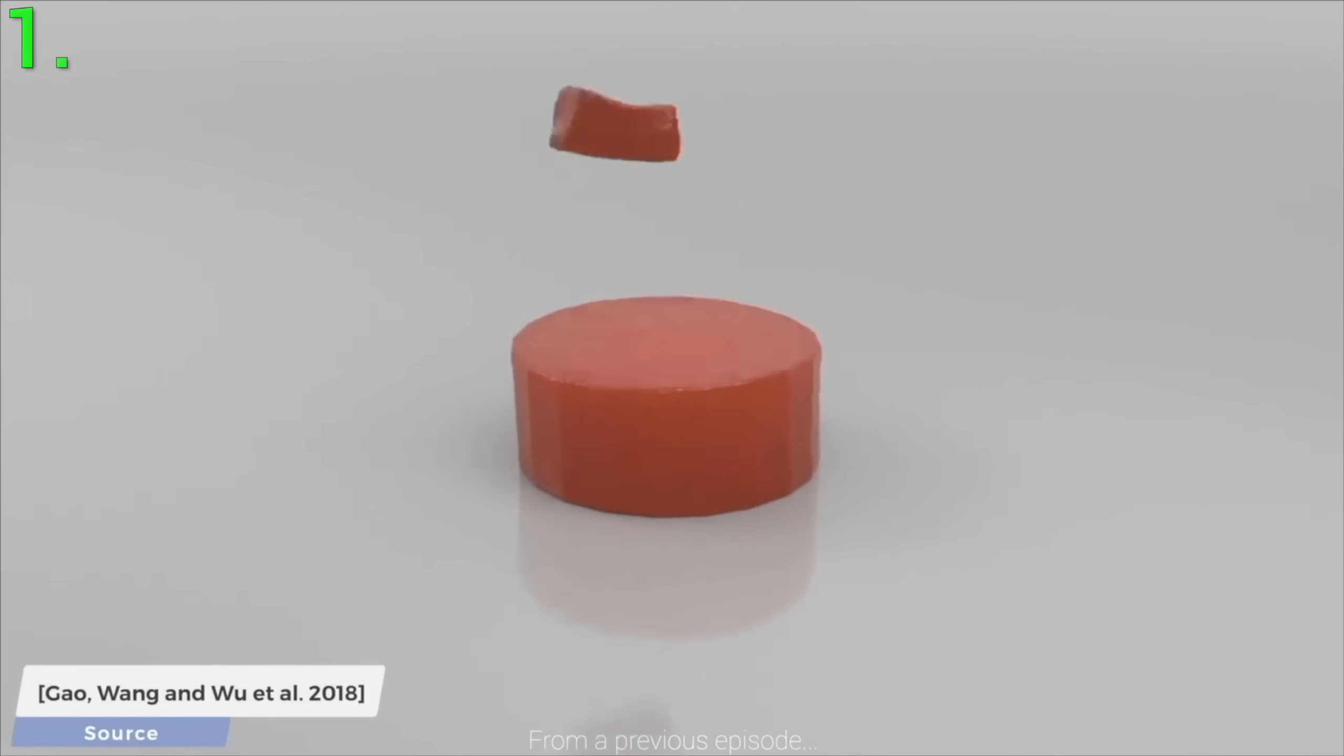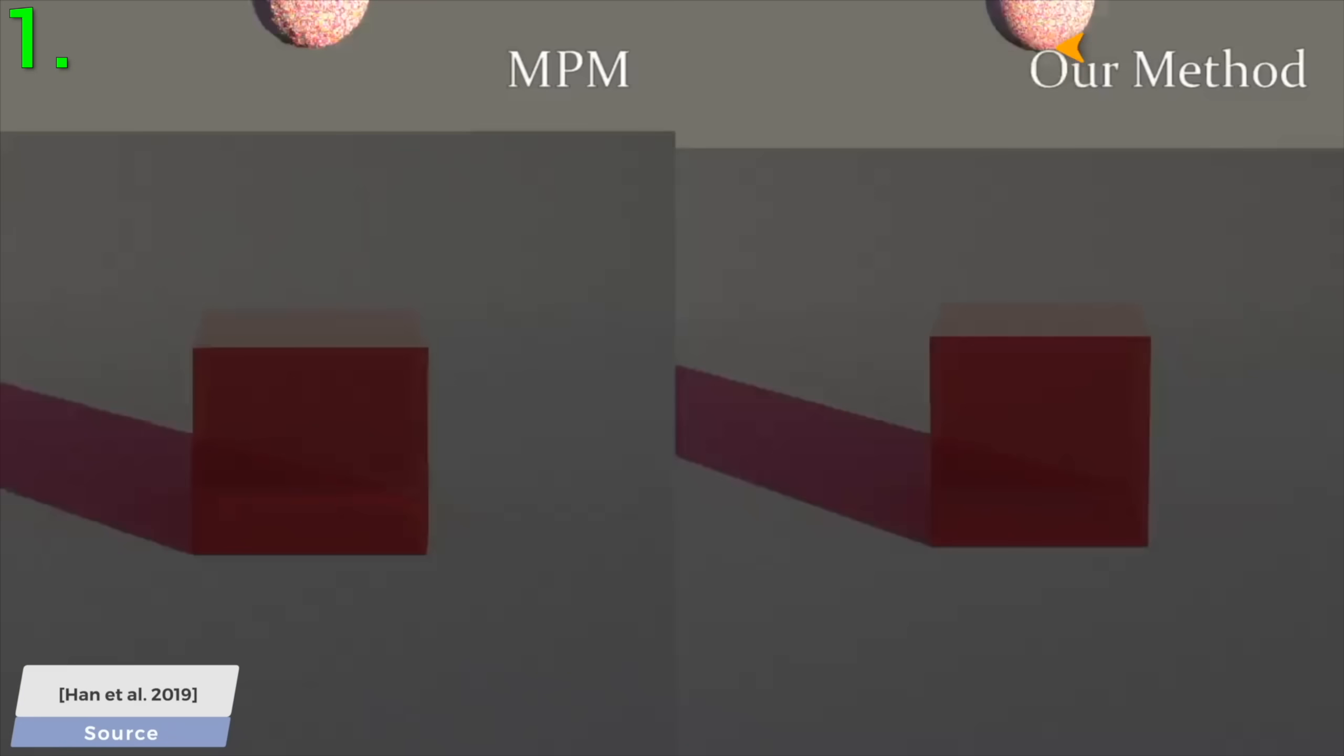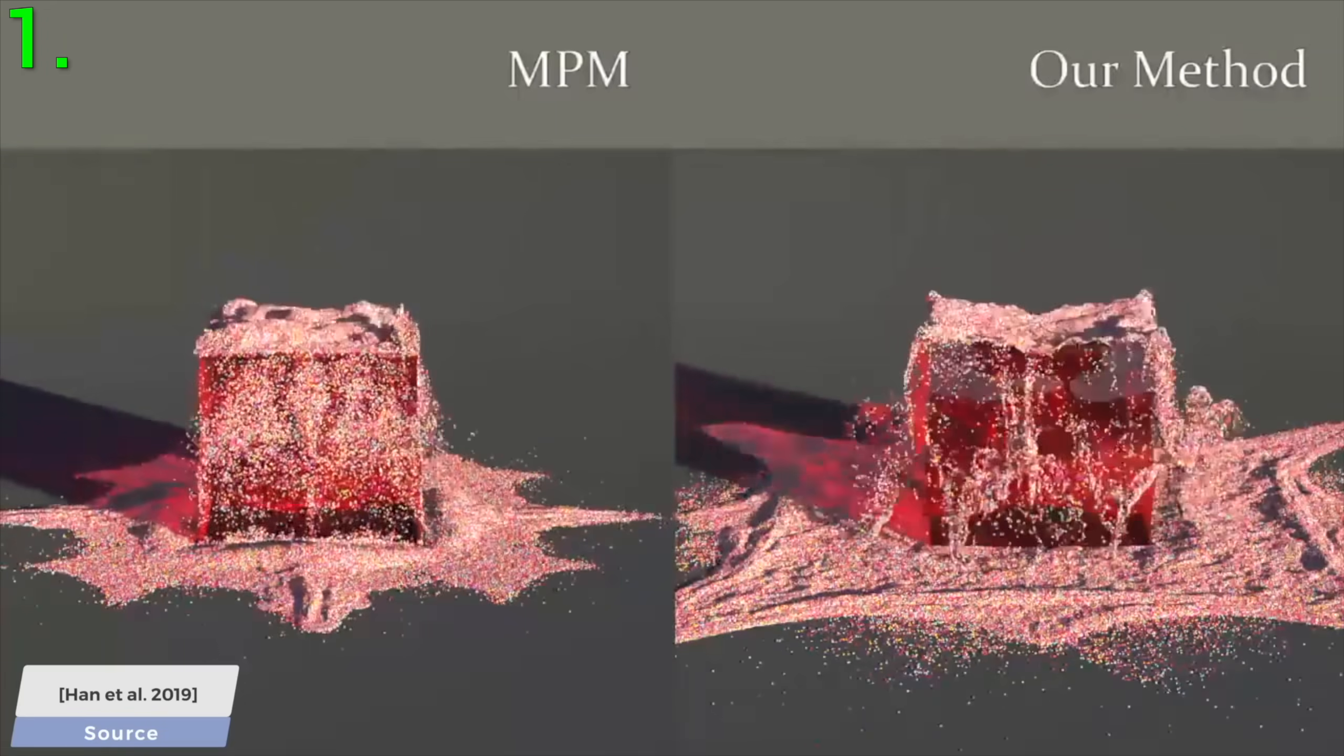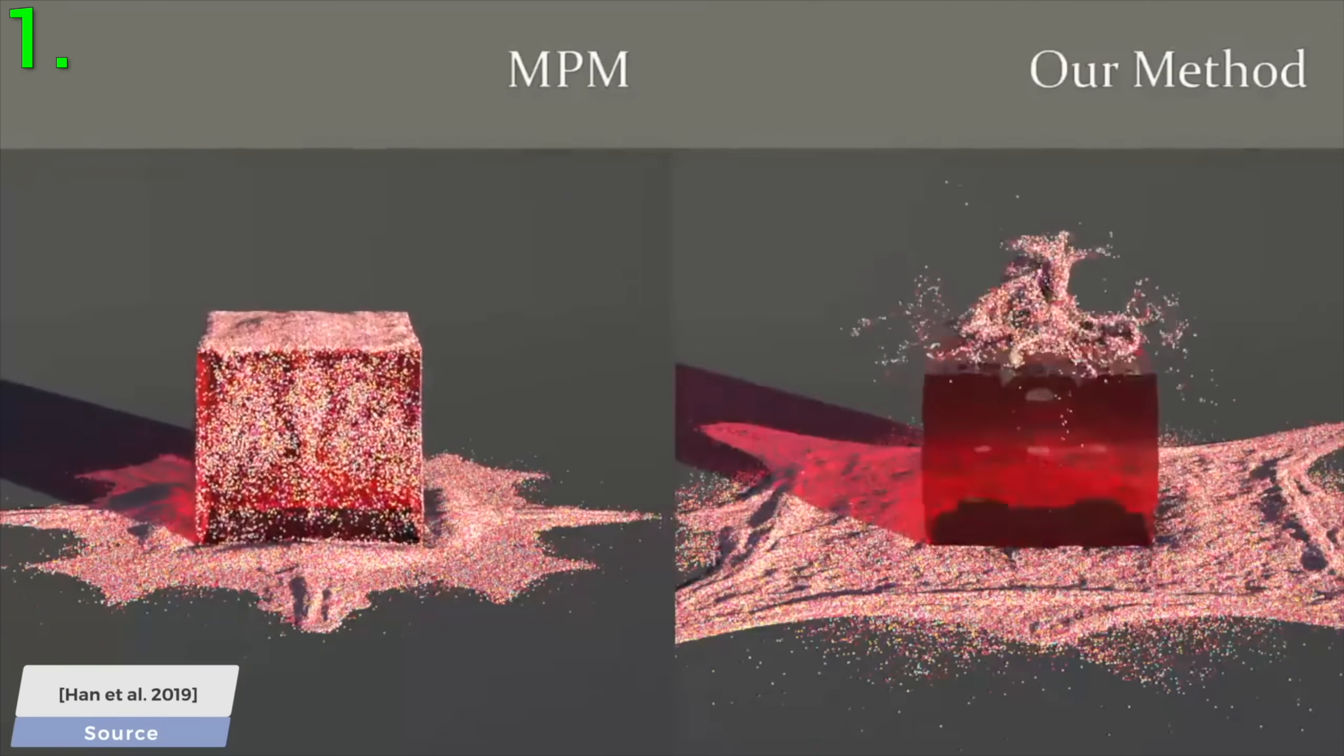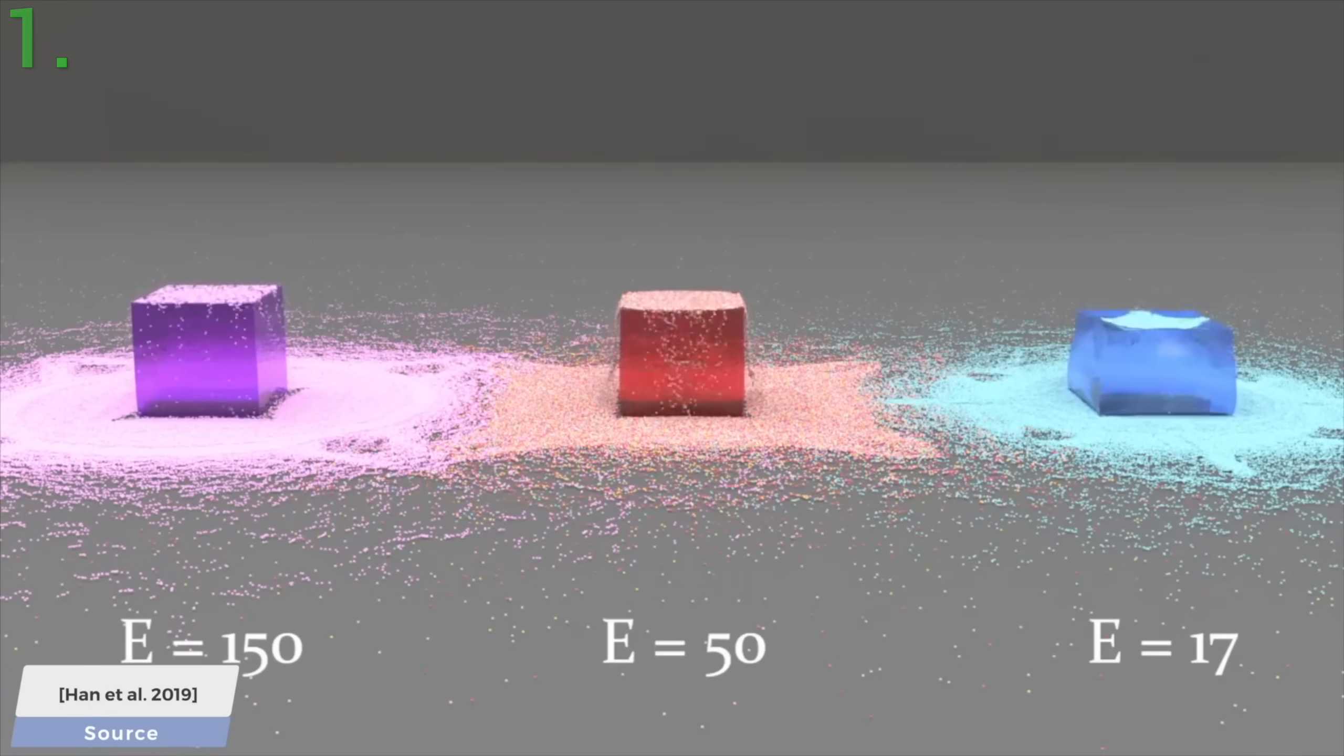One, in reality, we can experiment with whatever objects we have at our disposal, but in a simulation, we can do anything. Including changing the physical parameters of these objects, and thus, this previous work can simulate three jello blocks of different stiffness values. So cool!